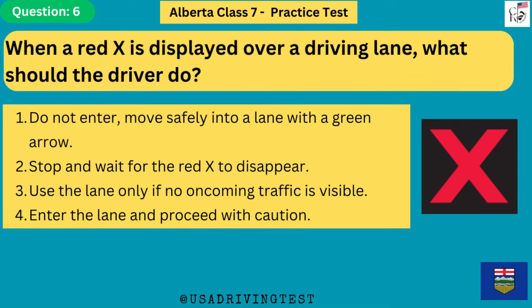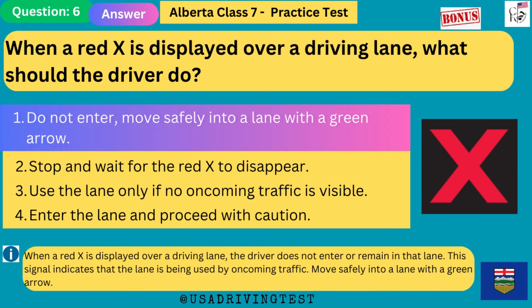When a red X is displayed over a driving lane, what should the driver do? 1. Do not enter — move safely into a lane with a green arrow. 2. Stop and wait for the red X to disappear. 3. Use the lane only if no oncoming traffic is visible. 4. Enter the lane and proceed with caution. The answer is 1: do not enter, move safely into a lane with a green arrow. This signal indicates the lane is being used by oncoming traffic.